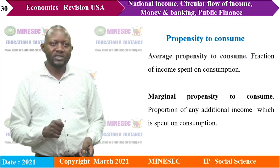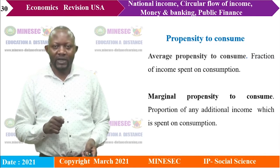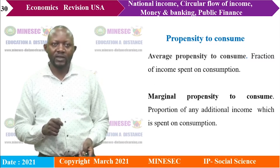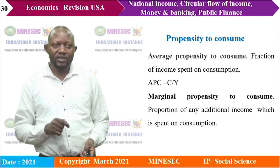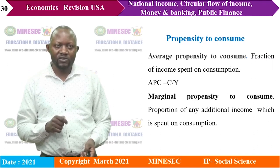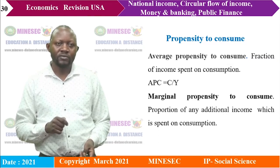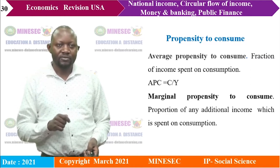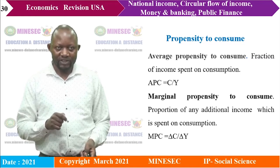The average propensity to consume (APC) is the fraction of income spent on consumption, given by APC = C/Y, where C is consumption and Y is income. The marginal propensity to consume (MPC) is the fraction of any additional income that is spent on consumption, given by MPC = ΔC/ΔY — change in consumption divided by change in income.